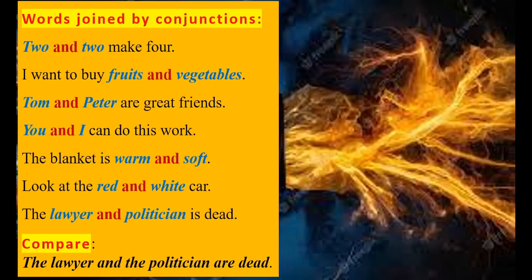Now note that when we say 'the lawyer and politician,' we mean one person is dead. But if we repeat the article — 'the lawyer and the politician' — then it would be two different persons. The lawyer would be a different person, the politician would be a different person. So 'the lawyer and the politician' — two persons are dead. But if you say the article only once, 'the lawyer and politician,' one person is dead.